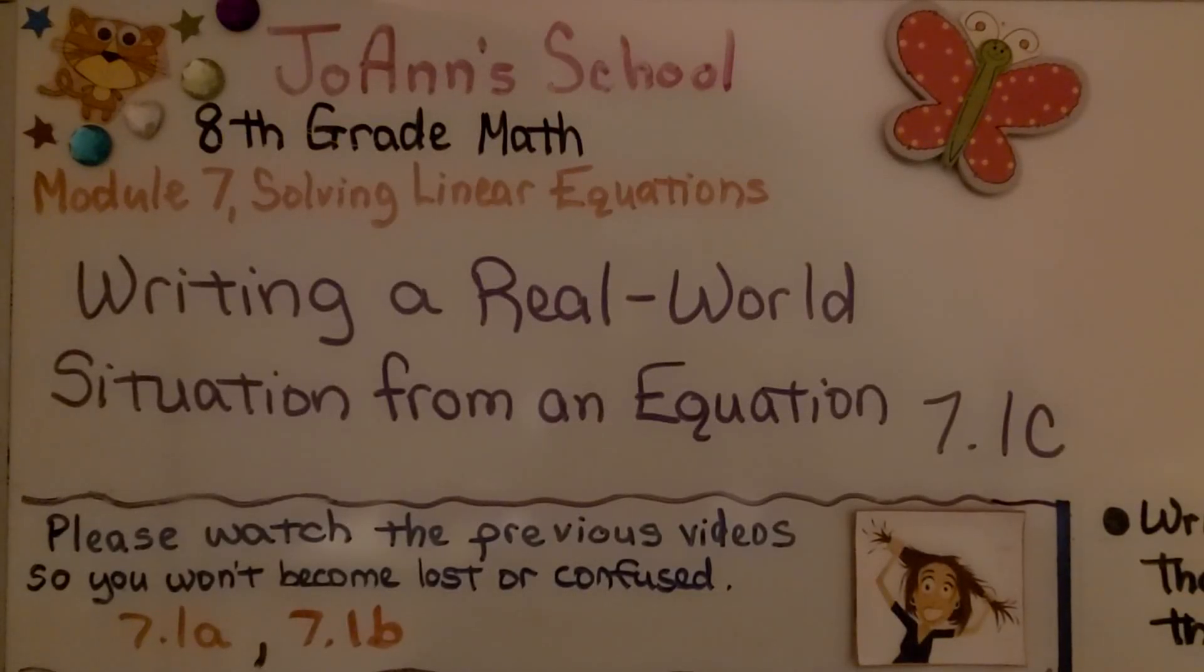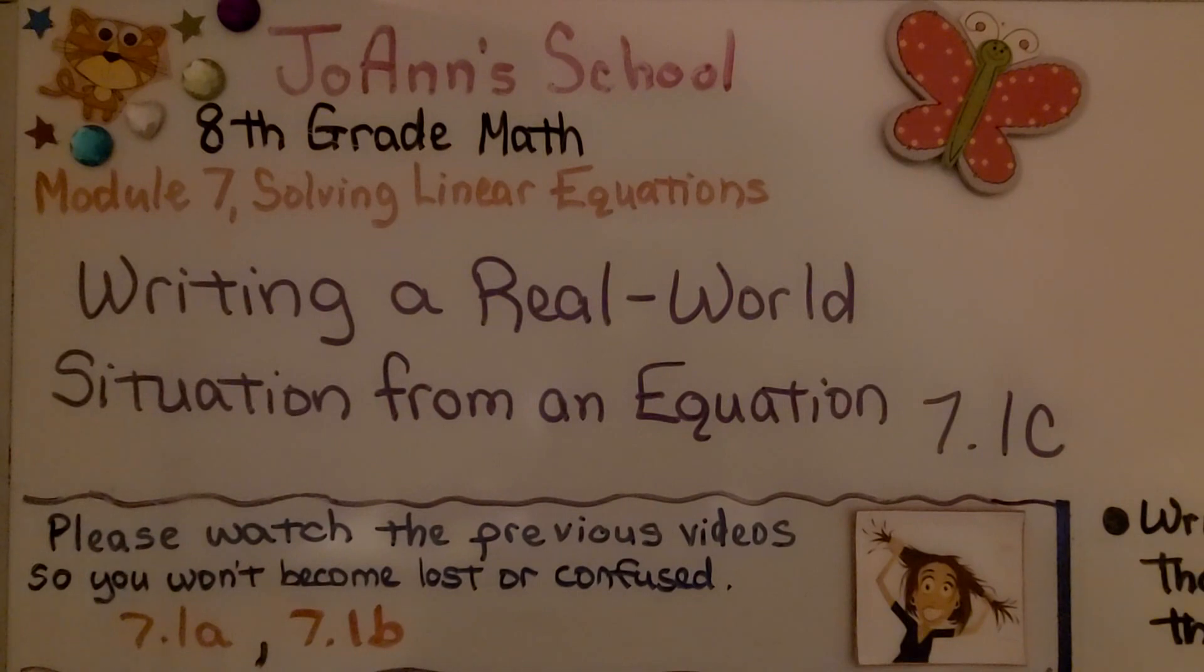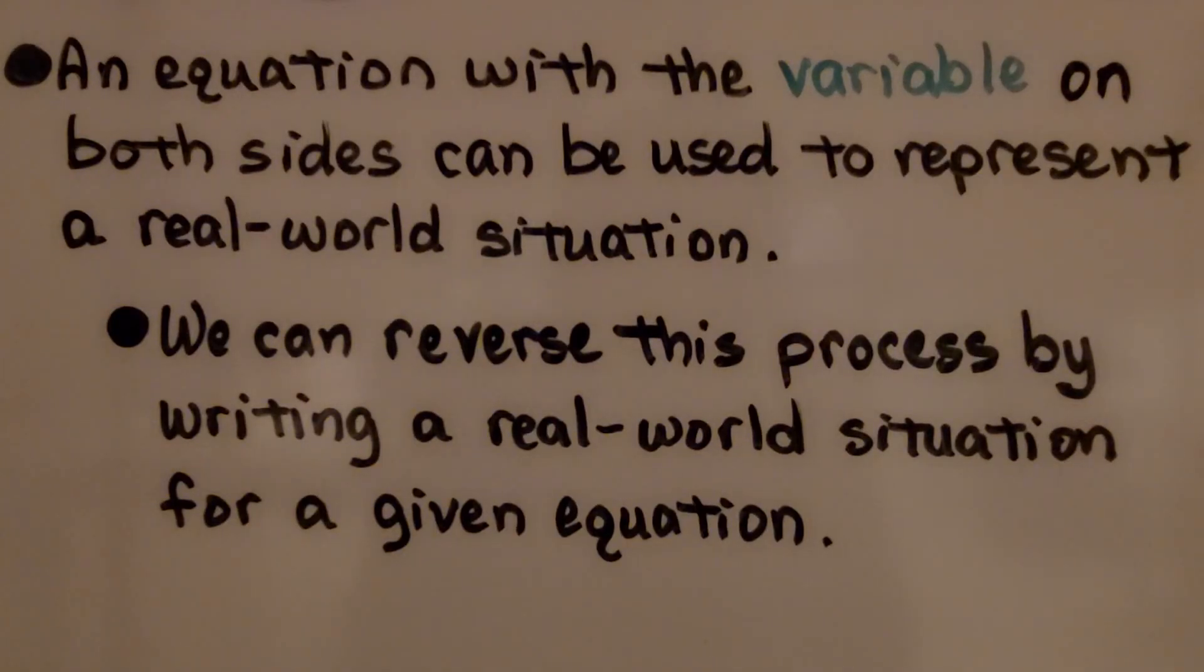Writing a real-world situation from an equation, Lesson 7.1c. An equation with the variable on both sides can be used to represent a real-world situation. So that means we have a variable on both sides of the equal sign. We can reverse this process by writing a real-world situation for a given equation.